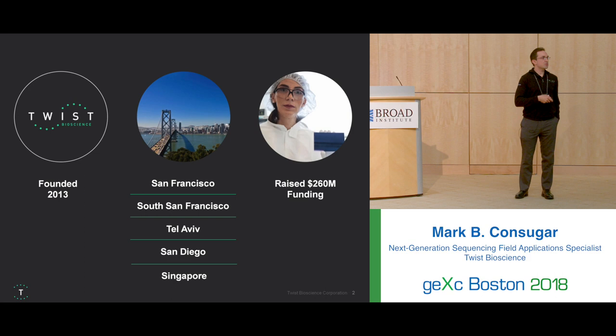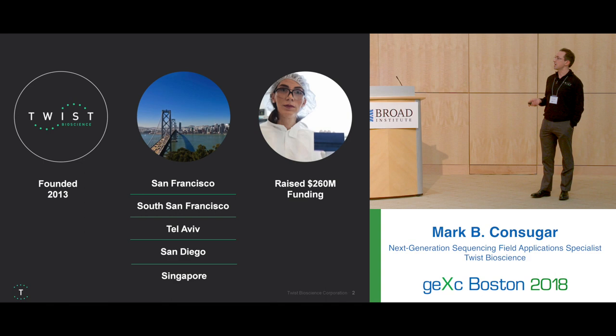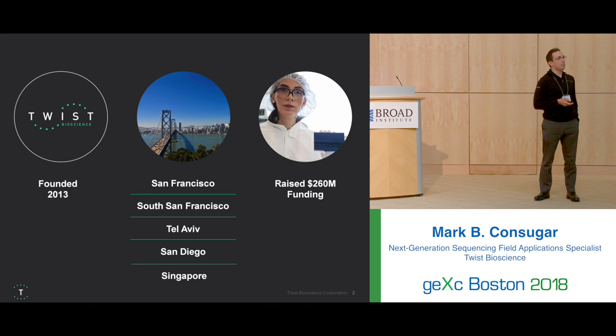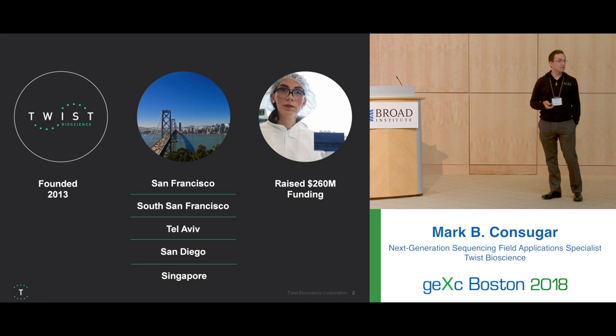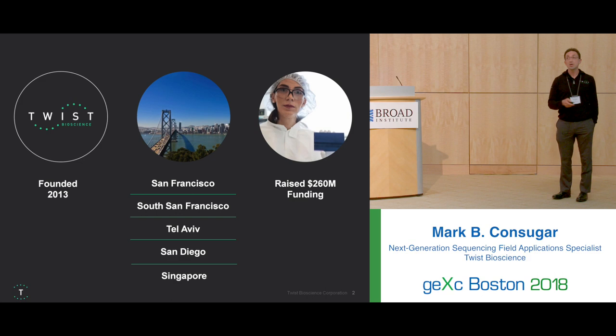To start, for people who don't know who Twist is: Twist is a synthetic DNA company. It was founded in 2013 and is based in the Bay Area in San Francisco. Our production facilities are in South San Francisco. We have a software division based in Tel Aviv, a tech support site in San Diego, and we've recently expanded into Singapore. As of today, we've raised over $260 million in external funding, so our upward trajectory is looking positive.